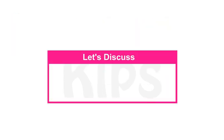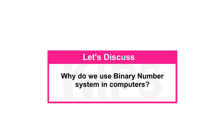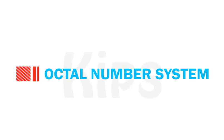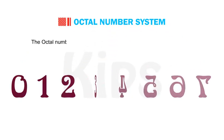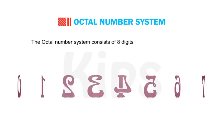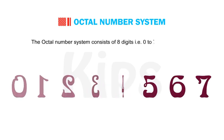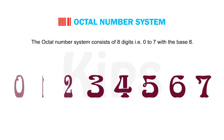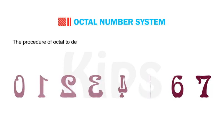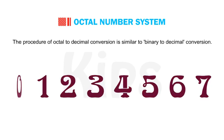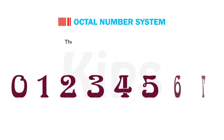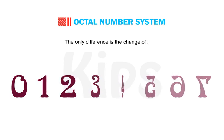Students, let us have a discussion on why we use binary number systems in computers. Now let us learn about the octal number system. The octal number system consists of 8 digits, that is 0 to 7, with the base 8. The procedure of octal to decimal conversion is similar to binary to decimal conversion — the only difference is the change of base.